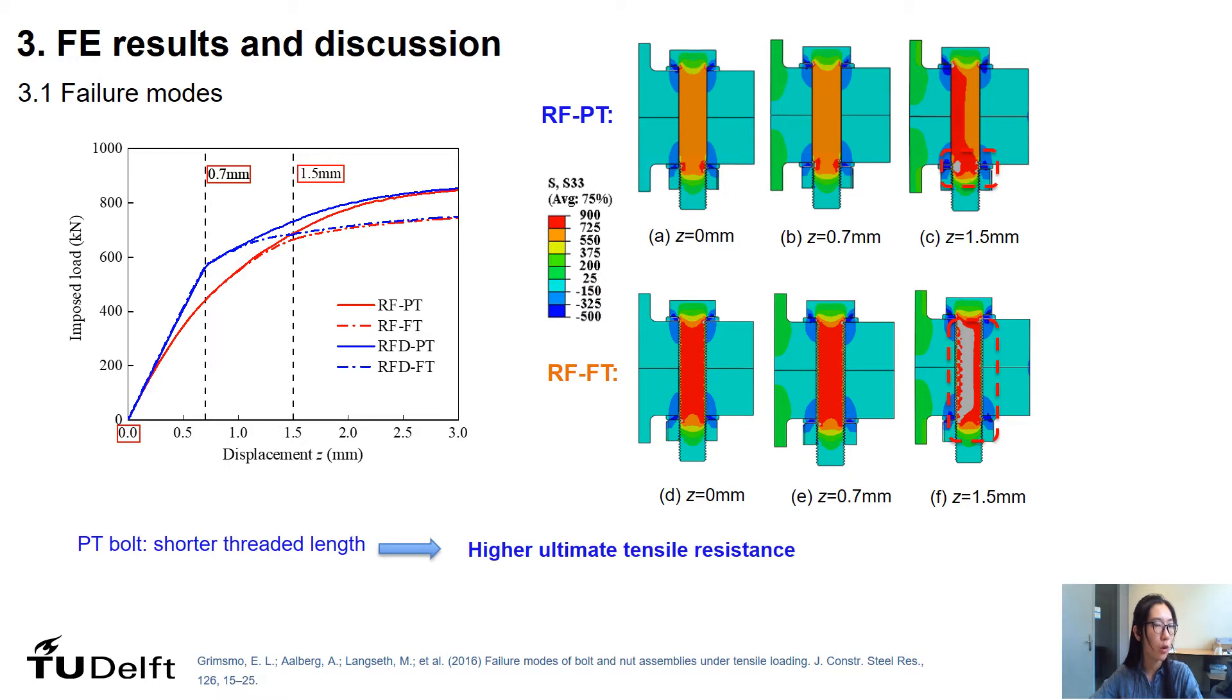Additionally, due to the smaller cross-sectional area at the threaded length compared with the unthreaded area, all the plastic deformation occurred within the threaded part. Therefore, the FT bolts had a significantly longer threaded length over which plastic deformation occurred.